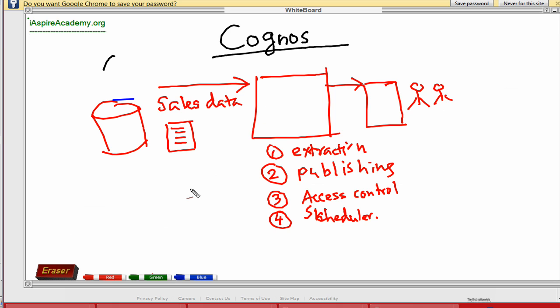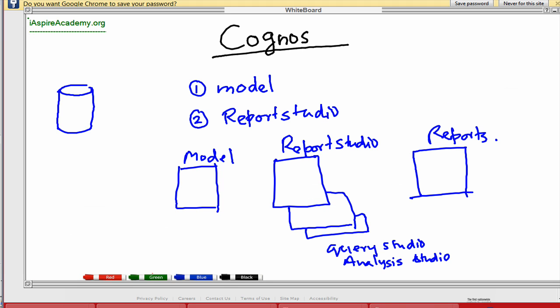So let me choose, let me just erase this part. So we are discussing about different parts of Cognos. So, or sorry, the basic components of reporting. Now, coming down to Cognos.